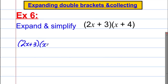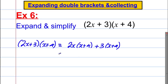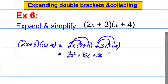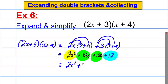Getting slightly harder: 2x add 3 multiplied by x add 4. Write as 2x multiplied by the second bracket, add 3 multiplied by the second bracket. Expanding: 2x times x is 2x squared, 2x times 4 is 8x, 3 times x is 3x, 3 times 4 is 12. Collecting like terms: 2x squared add 11x add 12.